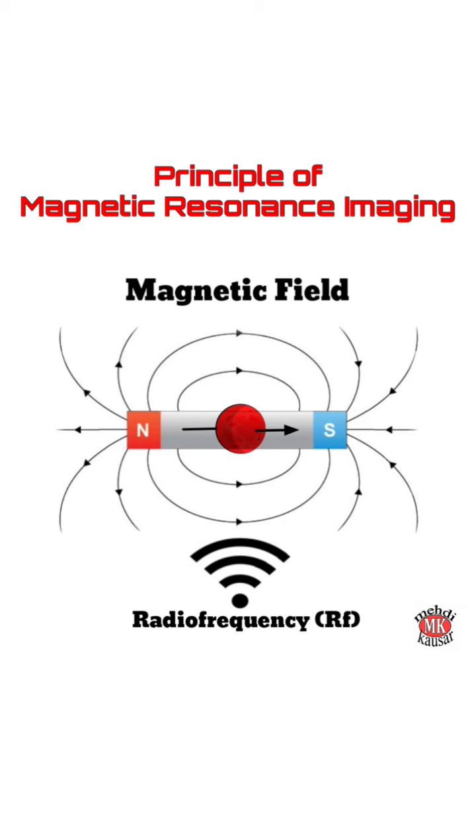Since the radio frequency pulse pushed the proton against its nature, once the pulse is turned off, the proton realigns with the magnetic field releasing electromagnetic radiation.